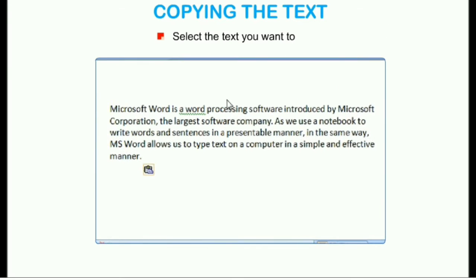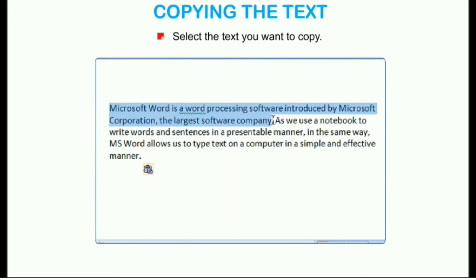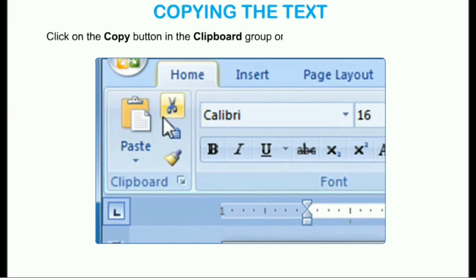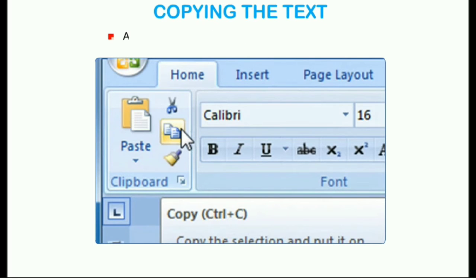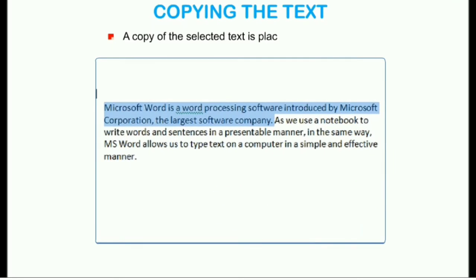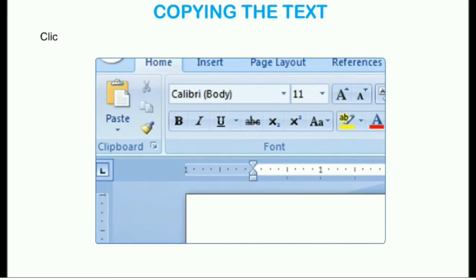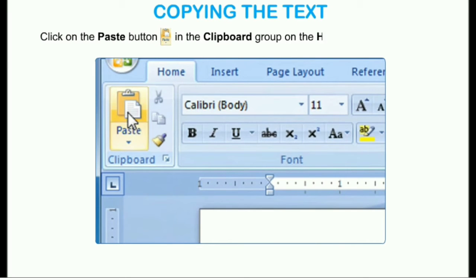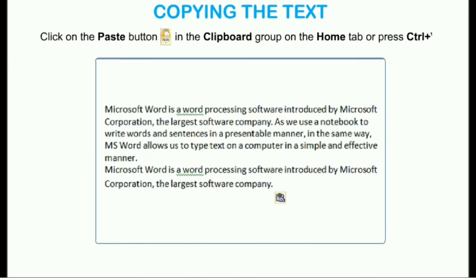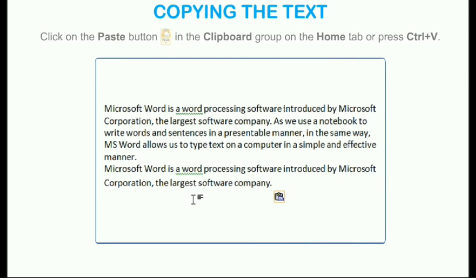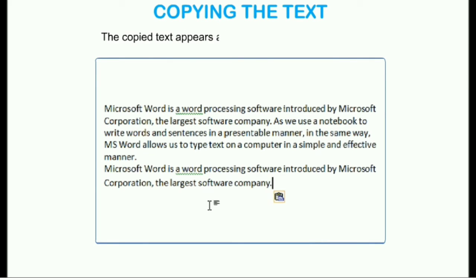Select the text you want to copy. Click on the Copy button in the clipboard group on the Home tab, or press Ctrl+C. A copy of the selected text is placed on the clipboard. Position the cursor at the desired place, then click on the Paste button in the clipboard group on the Home tab or press Ctrl+V. The copied text appears at its new location in the document.